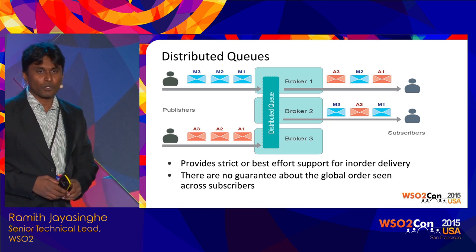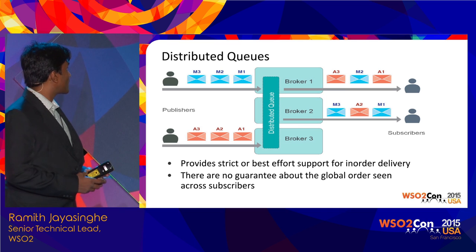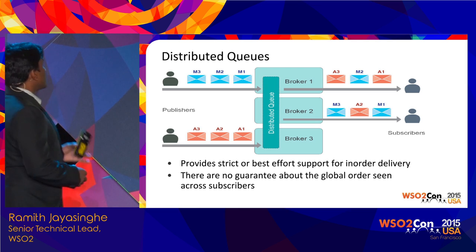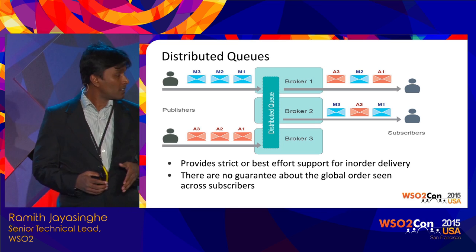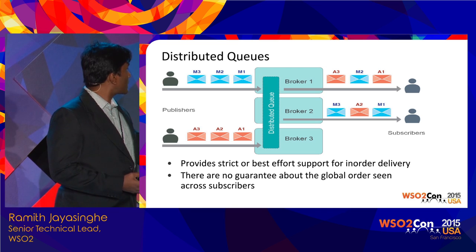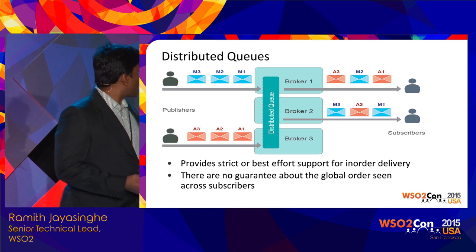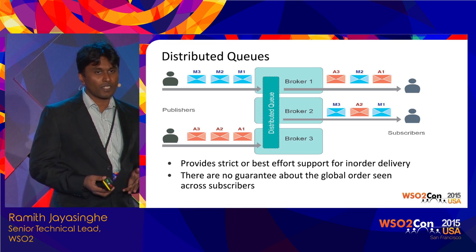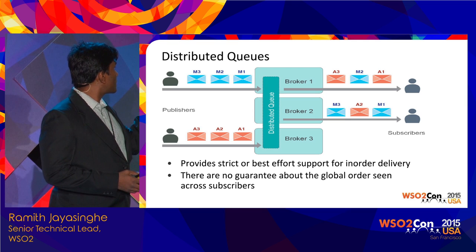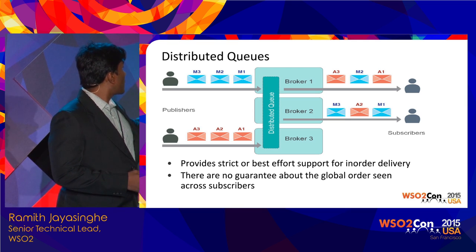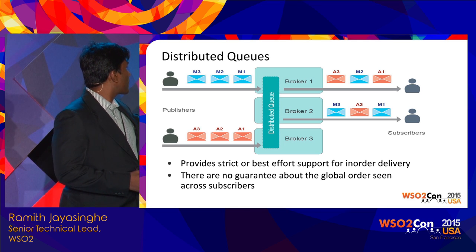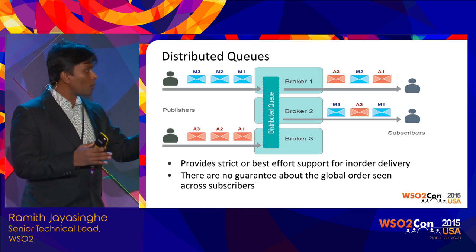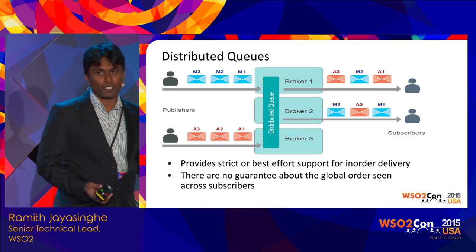In production, you will never install a single broker because that's a single point of failure. Most of the time you will run a cluster, giving you distributed queues and distributed topics. Ideally you want to send messages to one broker node and receive from another. In that case, global ordering is not really relevant — what matters is that messages are received in the order they were sent, as in M1, M2, M3 staying in sequence. Attempting global ordering across a cluster would kill performance anyway.